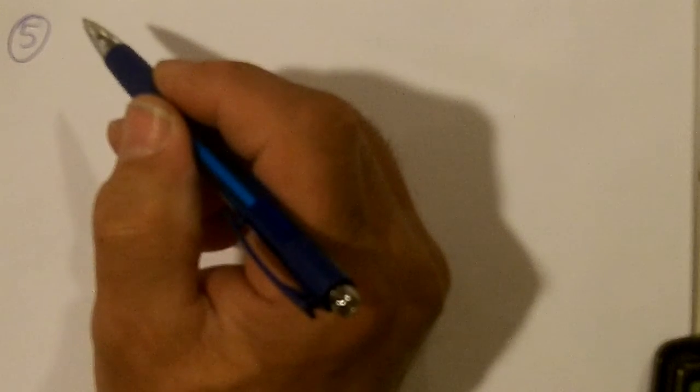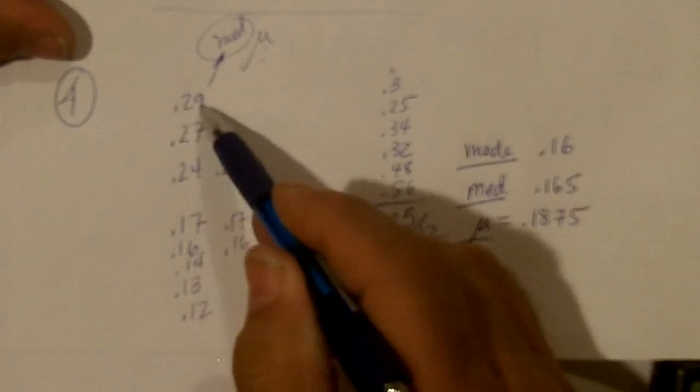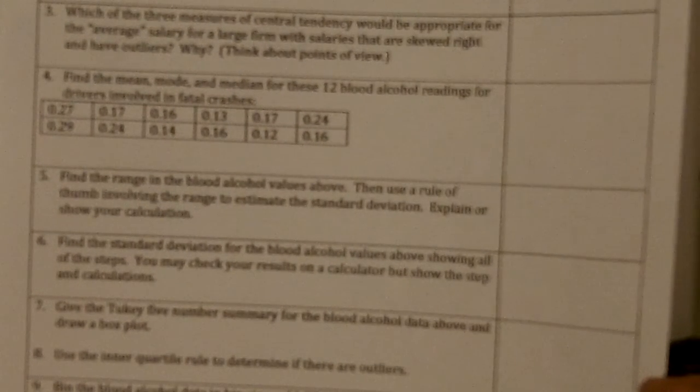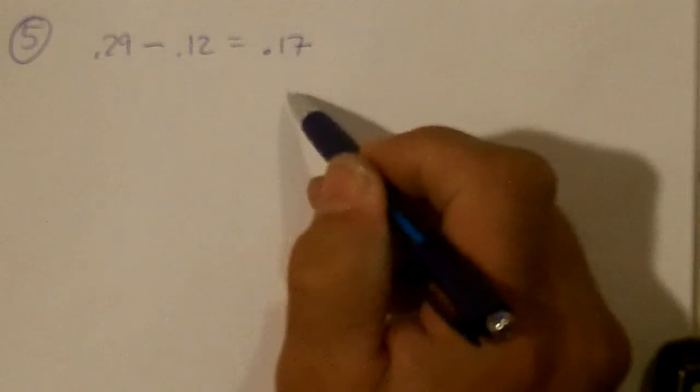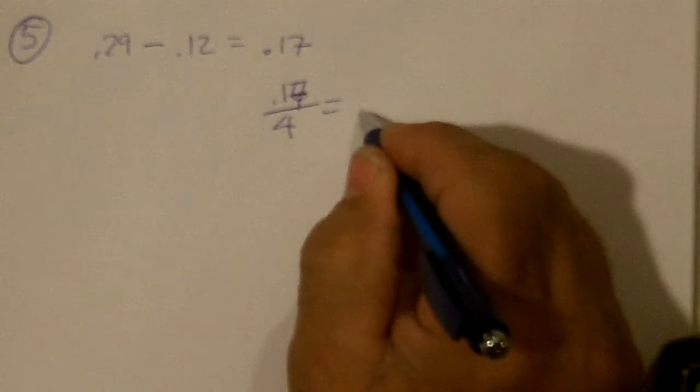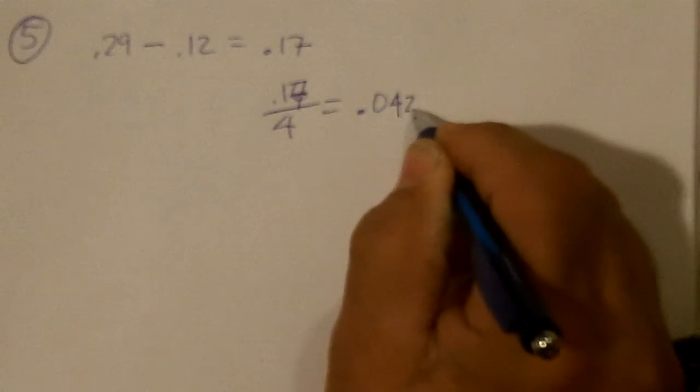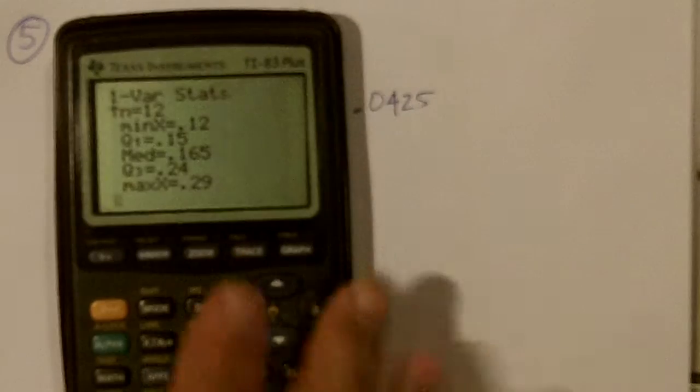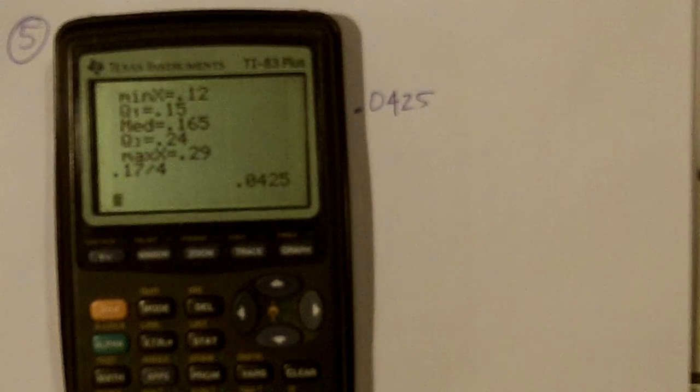Number 5, find the range of the blood alcohol values. Well, the range would be the largest minus the smallest. So that's .29 minus .12, which is .17. Now use the rule of thumb involving the range to estimate the standard deviation. The book says divided by 4, .167 divided by 4 is .0425, I believe. .17 divided by 4? .0425.